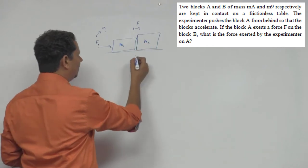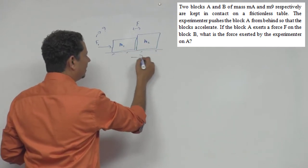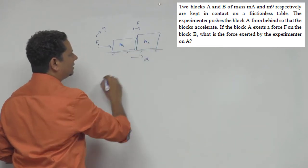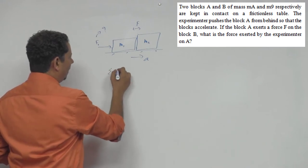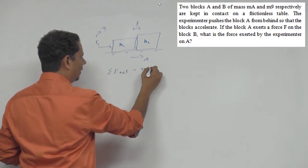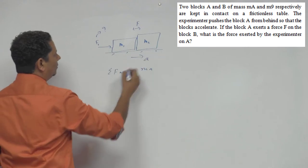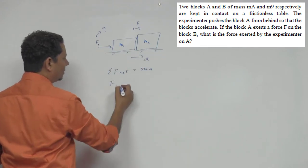Now agar aap dono ka FBD banayenge, so frictionless surface hai. Let's say poora system aapka acceleration se idhar ja raha hai. So hum yahan pe use karenge F_net = ma. Isko use karenge, so net force jo hai, wo aapka F1 force apply ho raha hai.